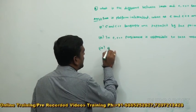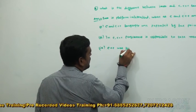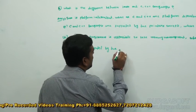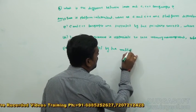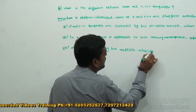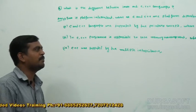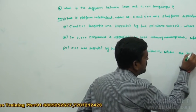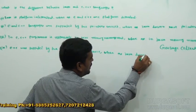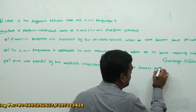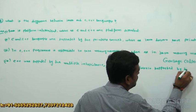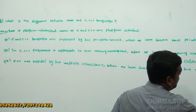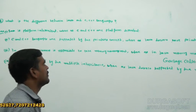The fourth difference: C++ is supported by multiple inheritance, whereas Java does not support multiple inheritance.